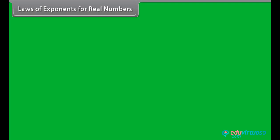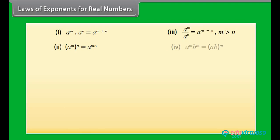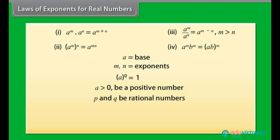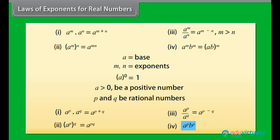Remember the laws of exponents. Here A is called the base and M and N are the exponents. A raised to the power 0 is 1. Let A > 0 be a positive number and P and Q be rational numbers. In multiplication, when bases are the same, powers are added. Two powers of the same base get multiplied. In division, when bases are the same, powers get subtracted. When powers are the same and bases are different and being multiplied, we take the power as common.